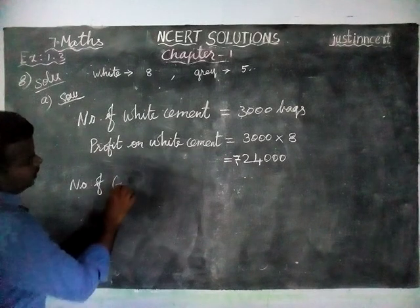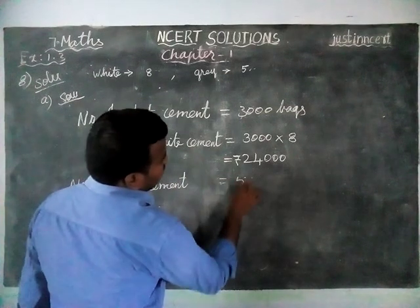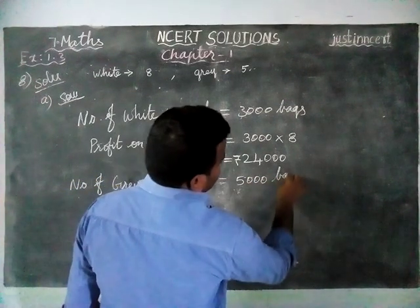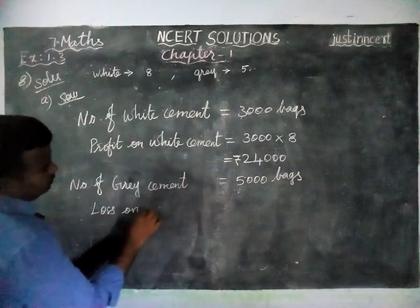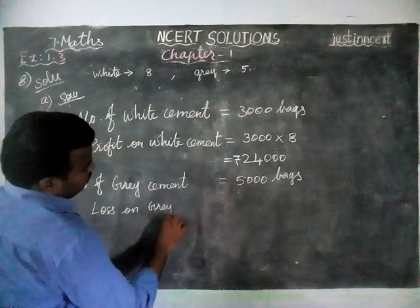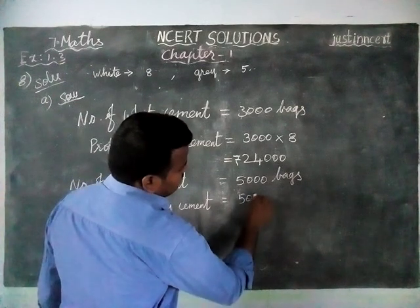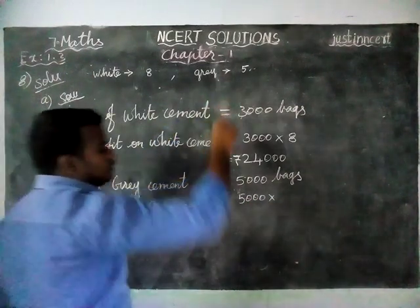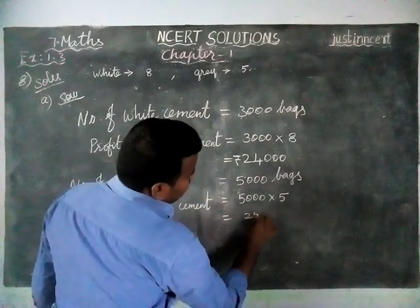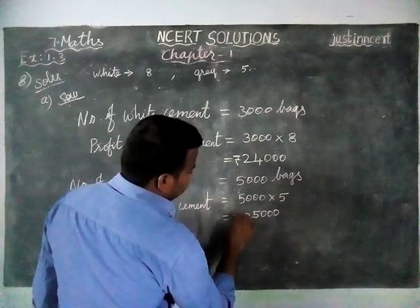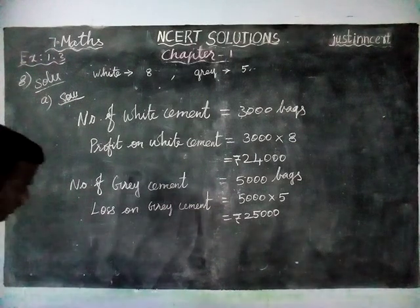Number of gray cement bags sold is equal to 5000 bags. Loss on gray cement is equal to 5000 bags multiplied by 5 rupees per bag, which equals 25,000. So they are losing 25,000 rupees.